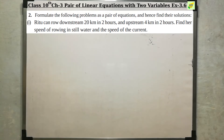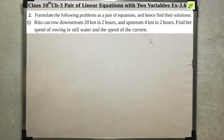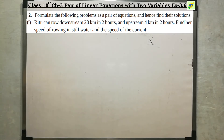Second sum: formulate the following problem as a pair of equations and hence find their solutions. First subdivision — Ritu can row downstream 20 kilometers in 2 hours and upstream 4 kilometers in 2 hours. Find her speed of rowing in still water and speed of the current.